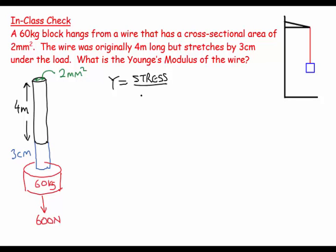Young's modulus equals stress over strain. The stress is the force per unit area that's applied, and the strain is the extension divided by the original length. We can rearrange this and say it's the force over the area, and when we turn this around it becomes the original length over the extension.